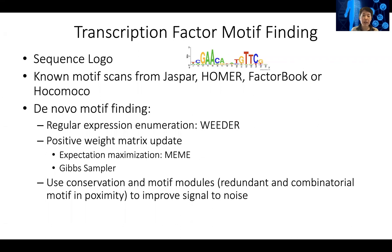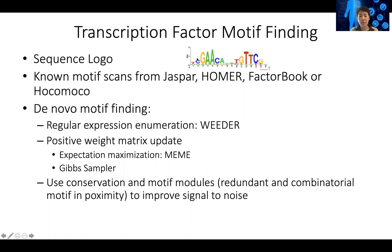In order to find transcription factor motifs in the genome or your input sequence — say a group of co-expressed genes — we first need to understand how transcription factor motifs are represented. This can either be represented as a regular expression, which is just a string like ACACGGT, or a sequence logo, which gives you a probabilistic model for how likely a transcription factor is recognizing this sequence.